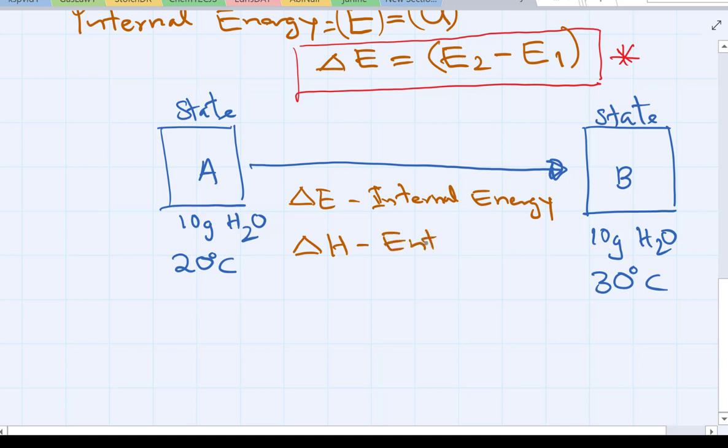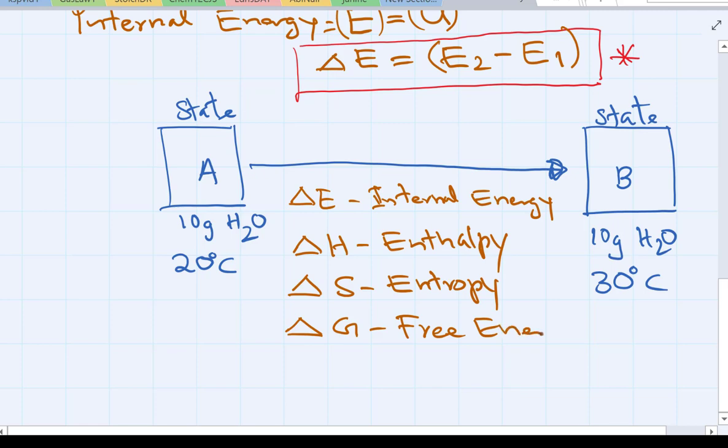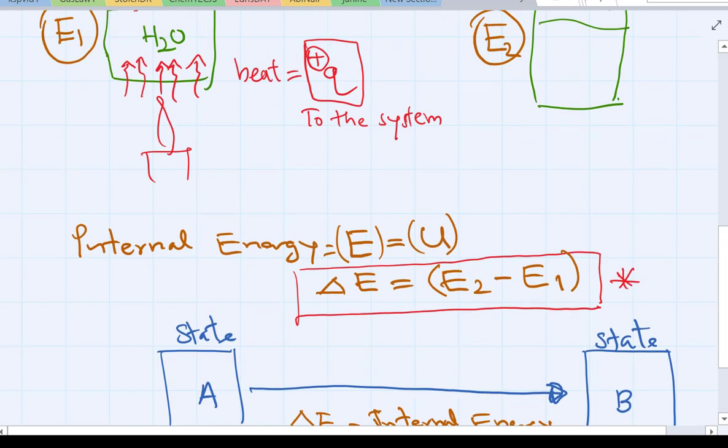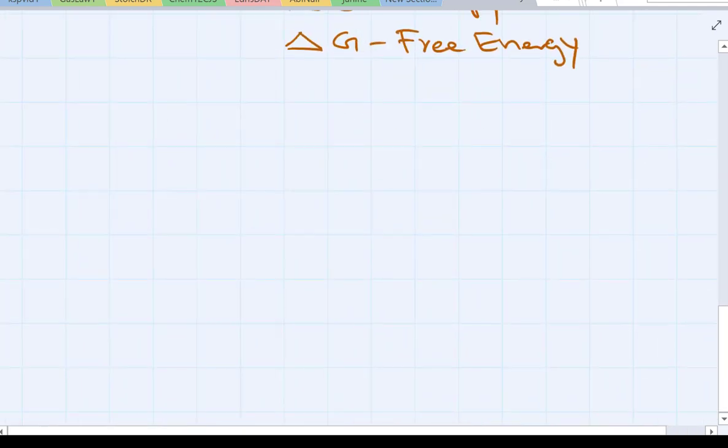Now also you have delta H, enthalpy change. Delta S is entropy change. And delta G is free energy change. Now all these are E, H, S, G, big letters. These are, we call, independent of the path. They are constant for that state. So that's the big difference.